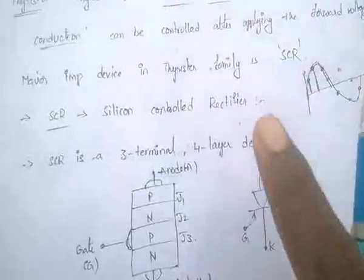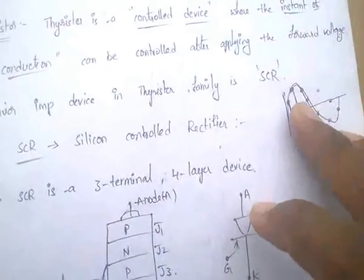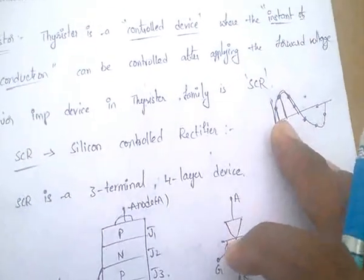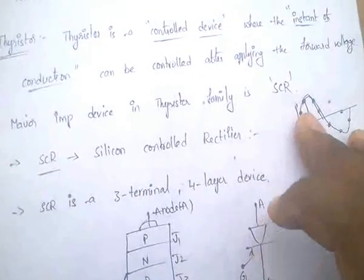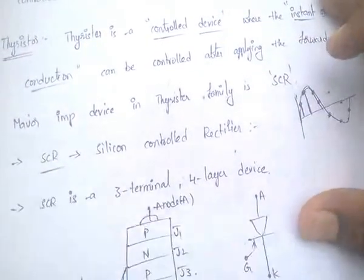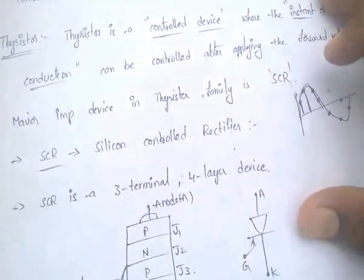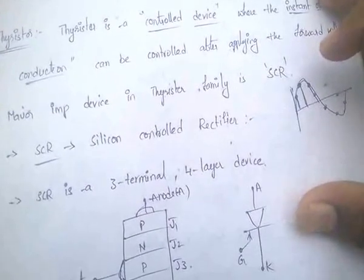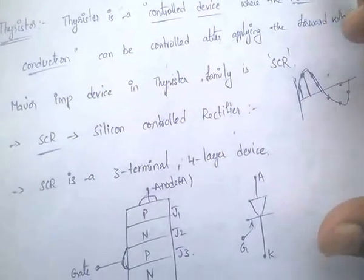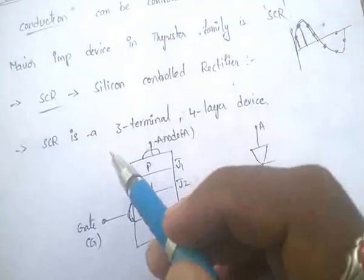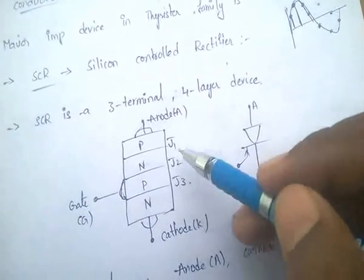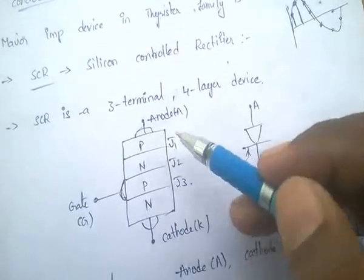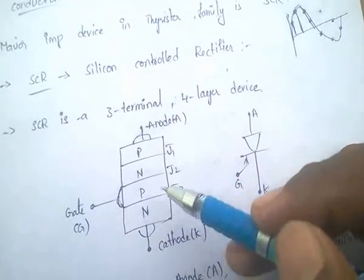The major important devices in the thyristor family: first is SCR — SCR means Silicon Controlled Rectifier. Coming to the SCR, it is a three-terminal, three-junction, four-layer device.